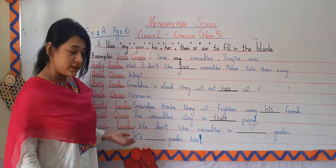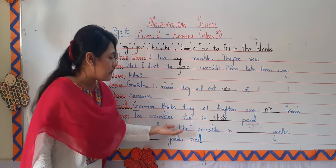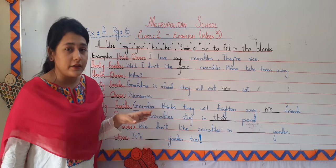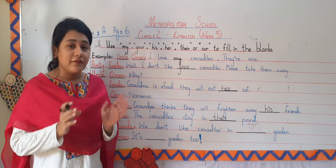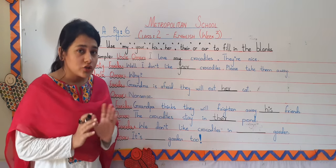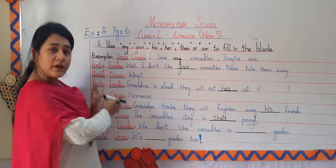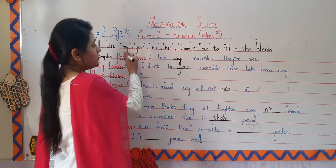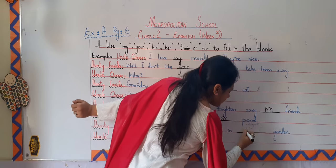Then Aunty Farida said, 'We don't like crocodiles in dash garden.' As we all know, every house has a garden. The garden belongs to the family of Uncle Umar and Aunty Farida. So we are going to use 'our' here.